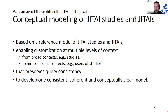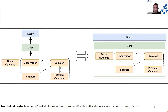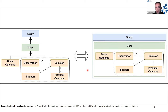Let's go through an example. Assume this is our simplified reference model: we have a study, within studies there are users, for users we measure a distal outcome, and we represent JITAIs as observation-based decisions whether to provide support, with the result measured as a proximal outcome. In the following example, we use nesting for a condensed representation — the composition relationship is represented as nesting of user within study.